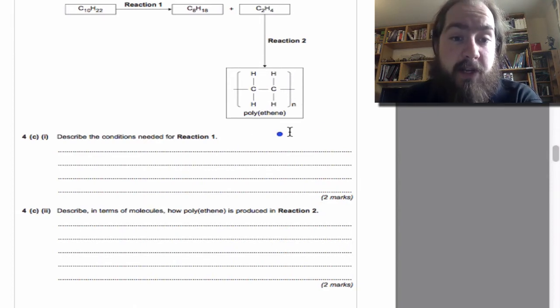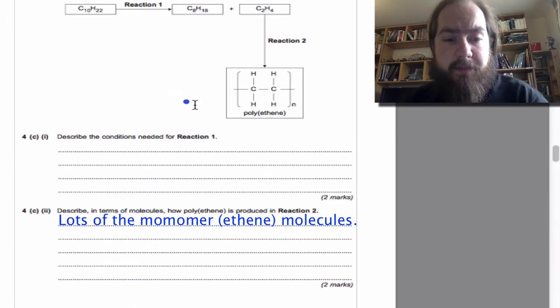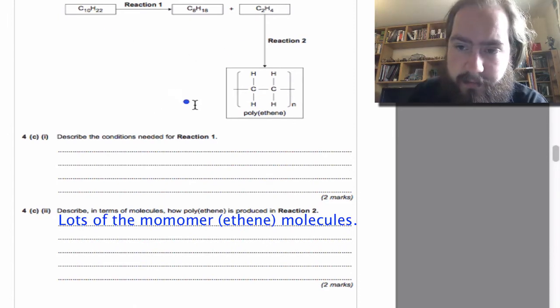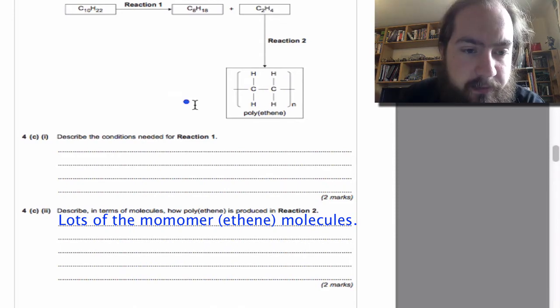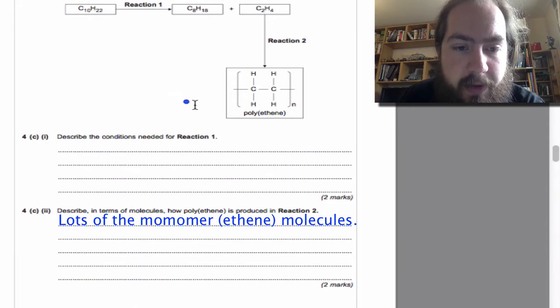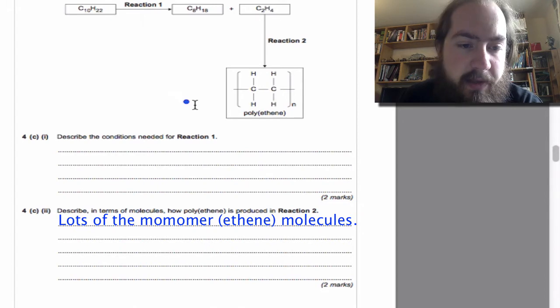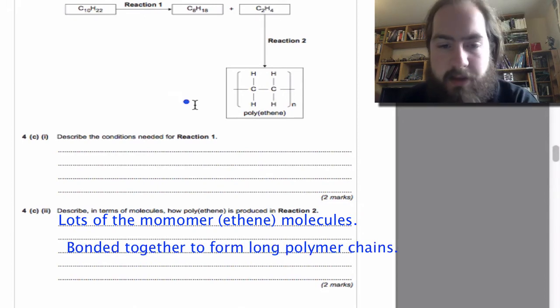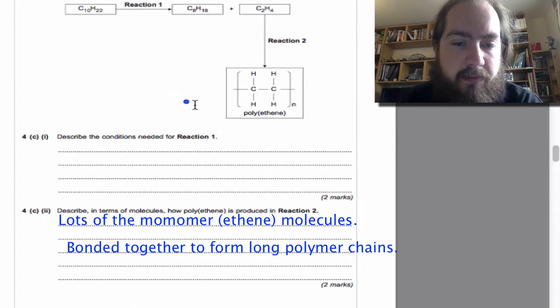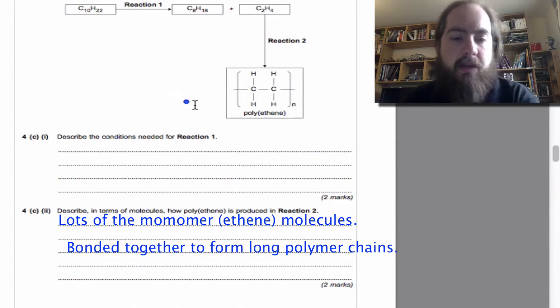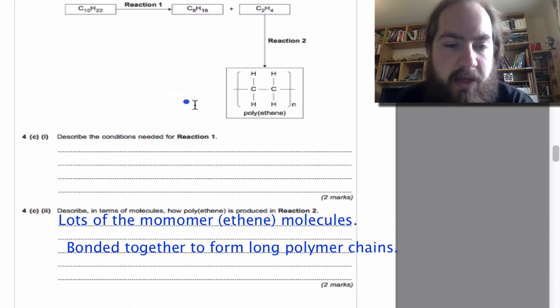So the way that happens is we take lots of the monomer, which is ethene, and bond them together into a very long chain. That very long chain is the one mark, and then the bonding together lots of the little ones is the other mark.